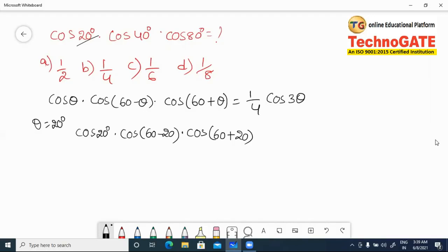Now the answer is 1/4 × cos 3θ, where θ is 20°. So 3 × 20° = 60°. That's 1/4 × cos 60°. Cos 60° = 1/2, so the answer is 1/8. Option D is correct.